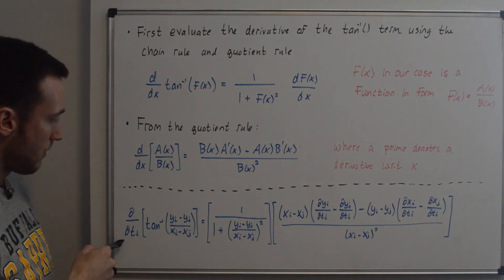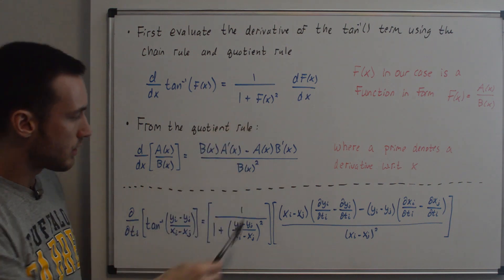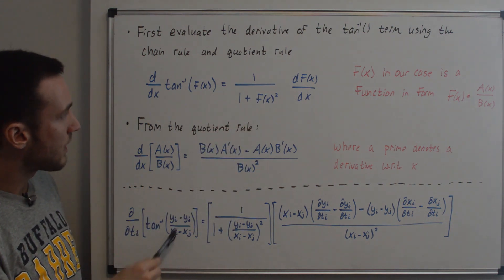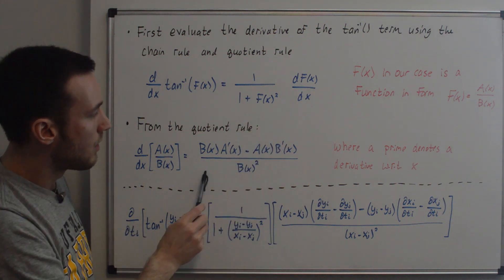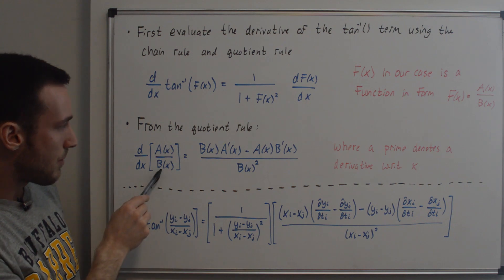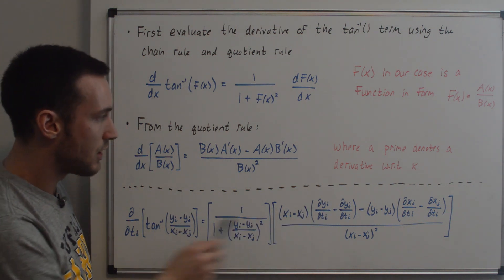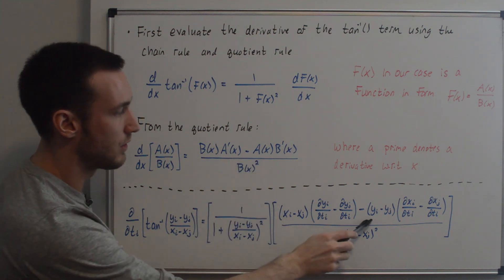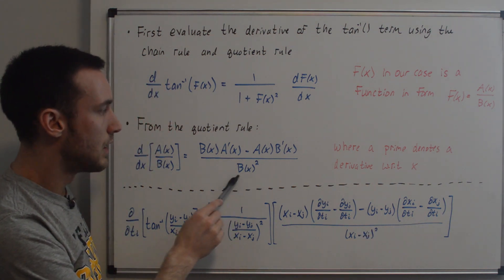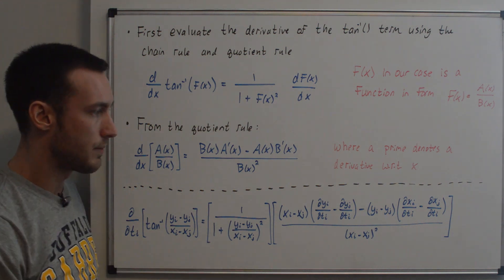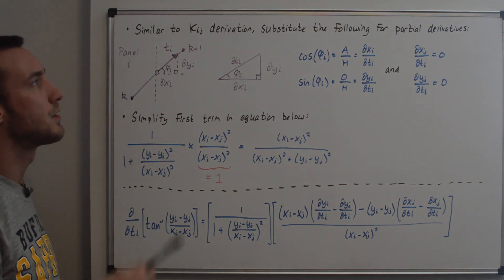Now we plug in the values. We have 1 over (1 plus f(x) squared), where f(x) is the argument inside the inverse tangent, squared. Then times df(x)/dx: b(x) is in the denominator so we have (x_i minus x_j), times a'(x) which is dy_i/dT_i minus dy_j/dT_i, minus a(x) times b'(x) which is dx_i/dT_i minus dx_j/dT_i, all over b(x) squared which is (x_i minus x_j) squared. We want to simplify the partial derivative terms, similar to the K_ij derivation.